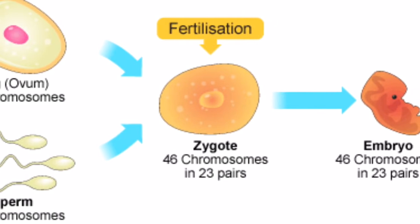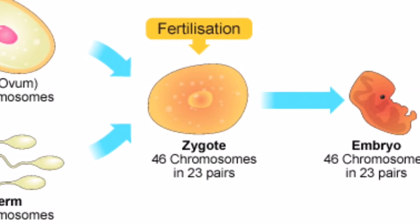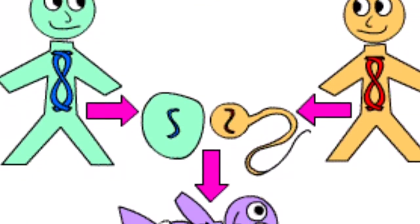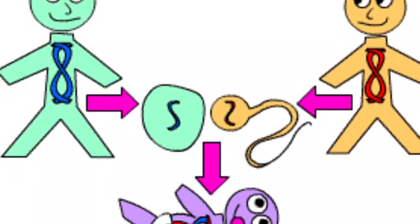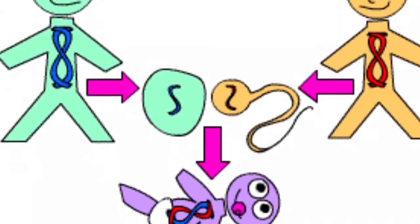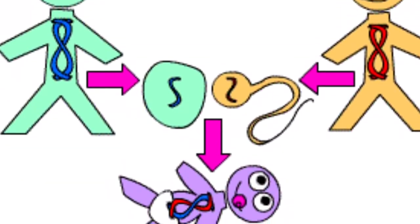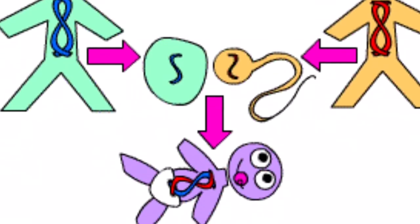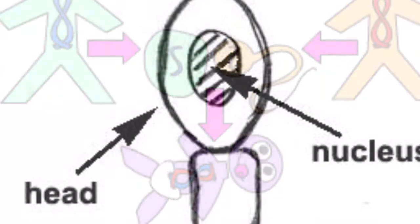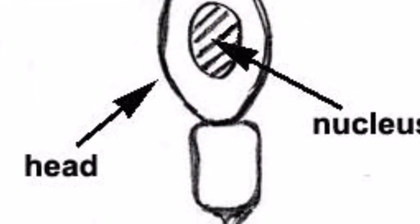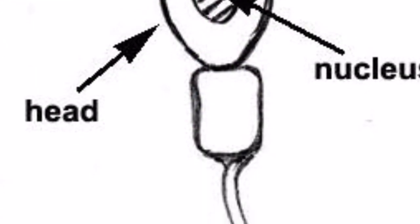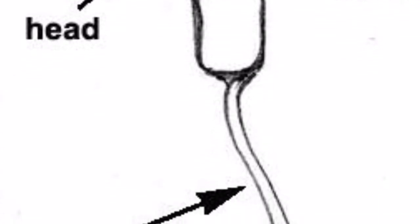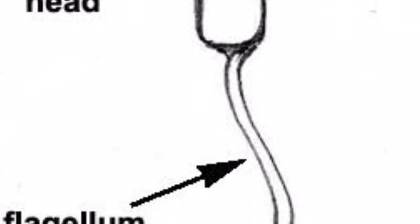A female has an egg cell with 23 chromosomes, while a male has a sperm cell with 23 chromosomes as well. When these cells combine in a process called fertilization, the chromosomes come together, leaving the new organism with 46 chromosomes and 23 pairs. The new organism will have traits from both the mother and the father.